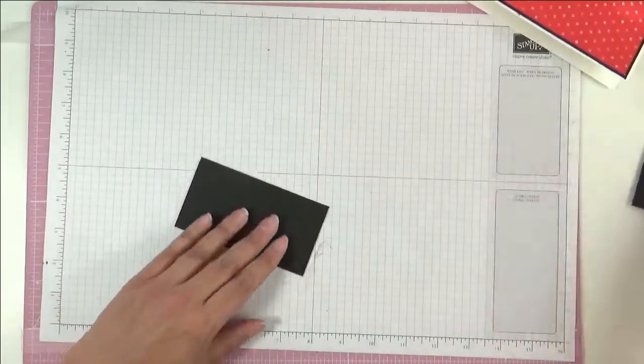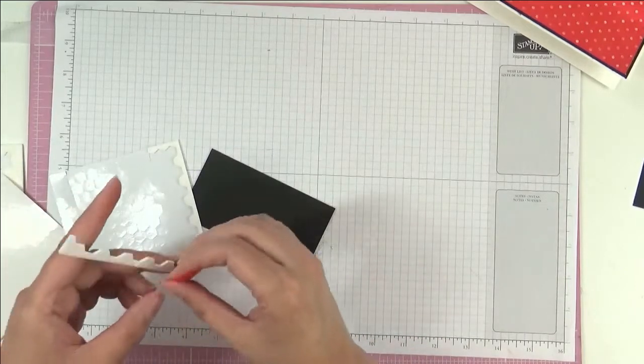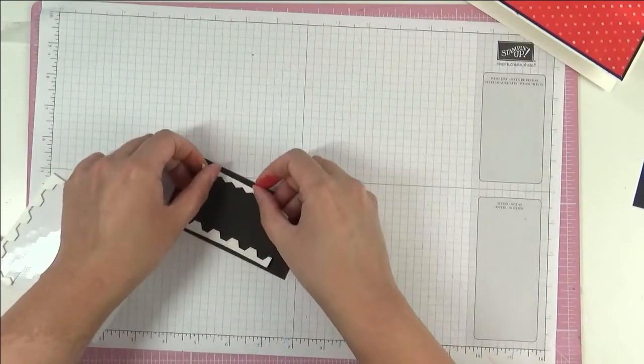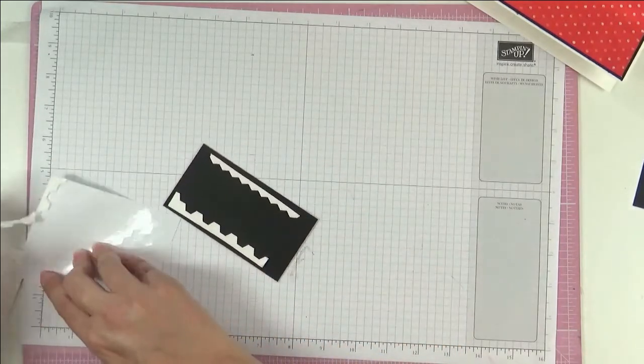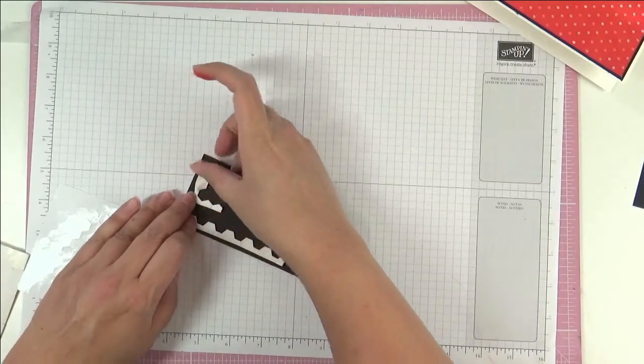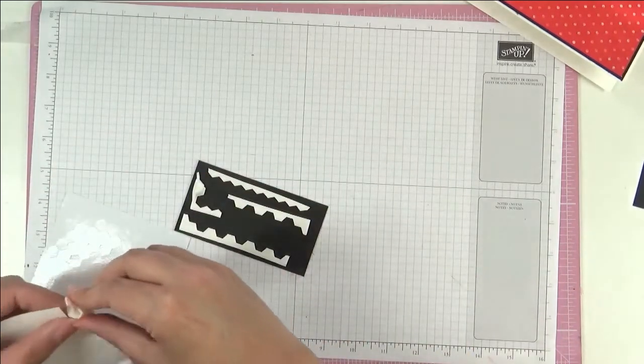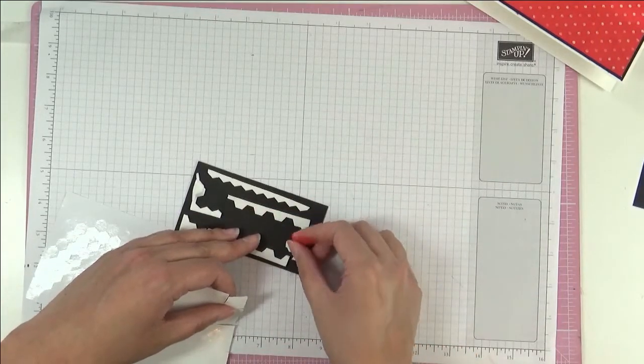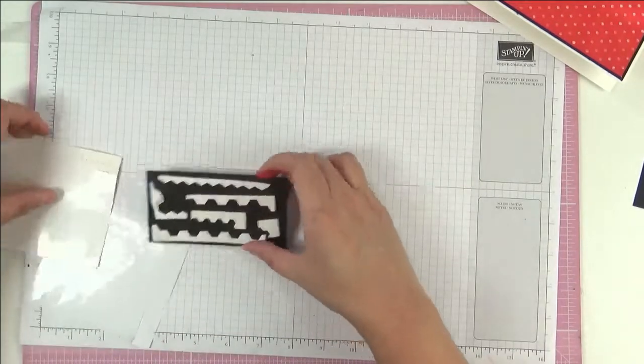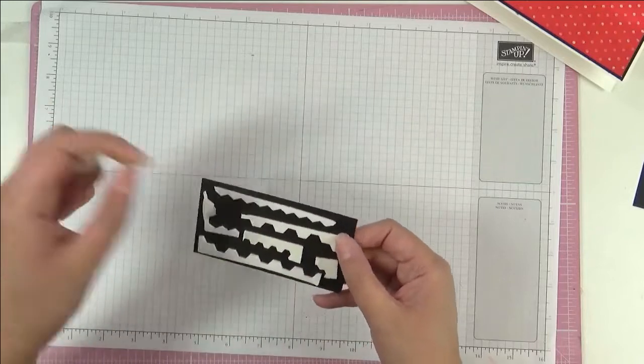Then we're going to just pop this up on some dimensionals. I usually save my edges for this, so it makes it so much easier than having to peel off tons of backings. I'm just going to move that onto there, get rid of those, and then take the backings off.